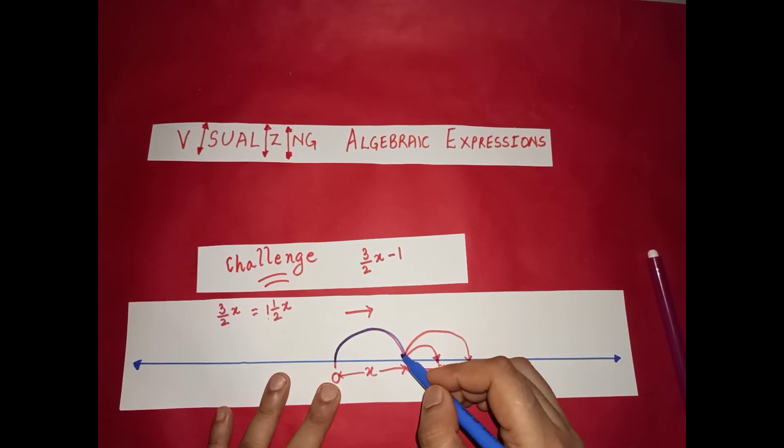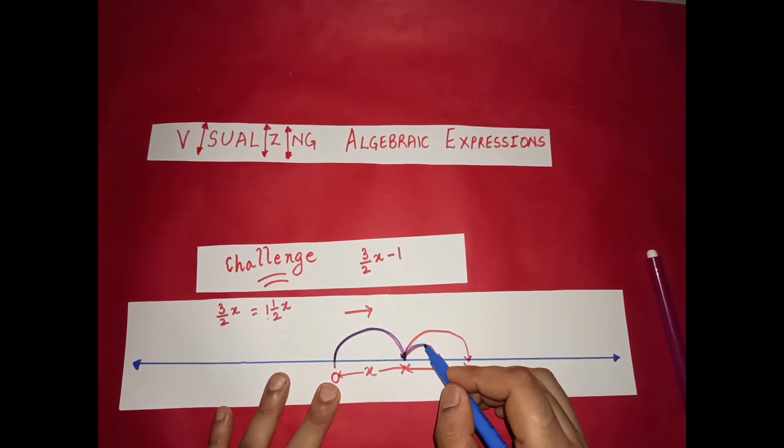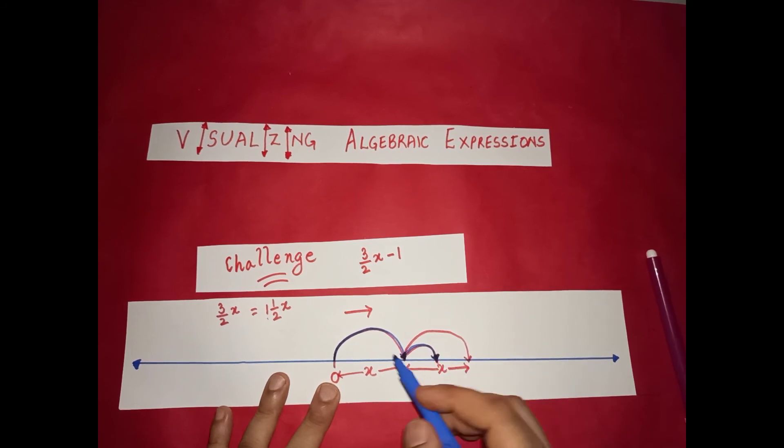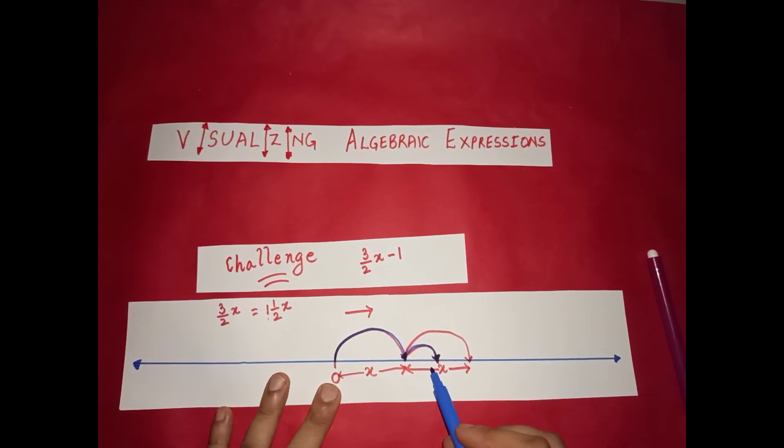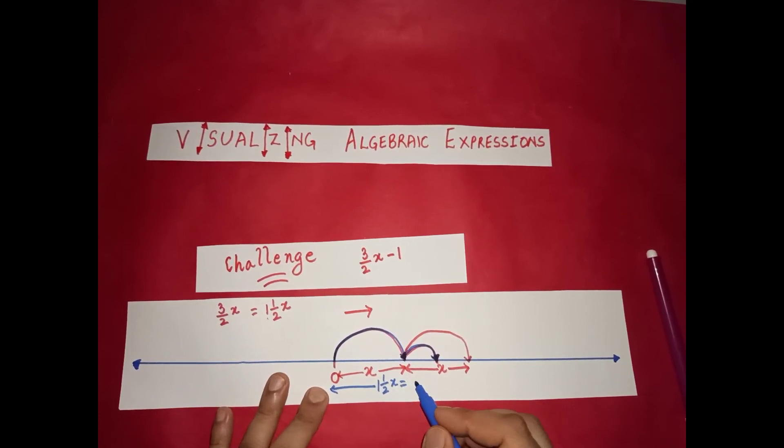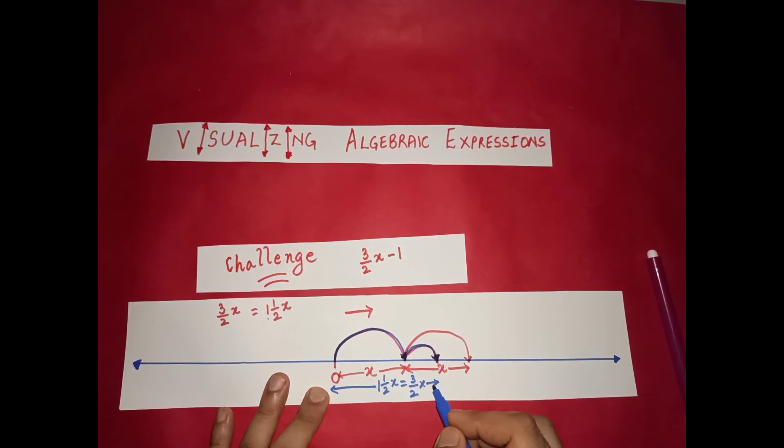This is 1 x. And this is half x. So this whole is 1 and a half x, or 3 over 2 x.